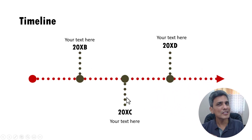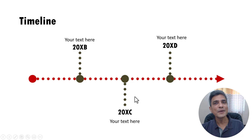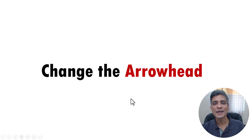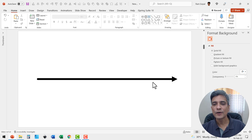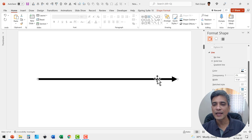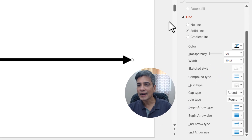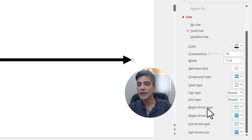But how did we change the end type to that large circle? That brings me to the second way you can manipulate your arrows — by changing the arrowheads. PowerPoint allows you to change the arrowheads to suit your specific requirements. For that, let me once again go to the same pane: right click, Format Shape, Fill & Line, and here you can see I can change my begin arrow type and end arrow type.